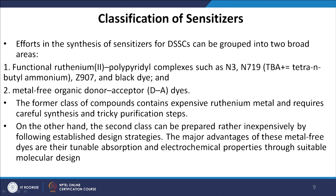Efforts in synthesizing sensitizers for DSSCs can be grouped into two broad areas. The first is functional ruthenium polypyridyl complexes such as N3, N719 (used with TBA — tetrabutylammonium), Z907, and the black dye. The second approach is metal-free organic donor-acceptor (D/A) dyes. The ruthenium-based compounds contain expensive ruthenium metal and require careful synthesis and very tricky purification processes, making these dyes very costly.